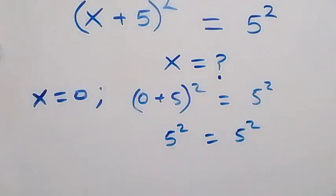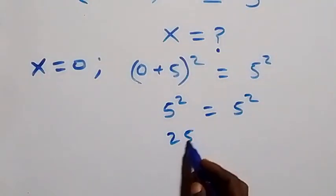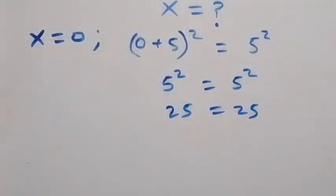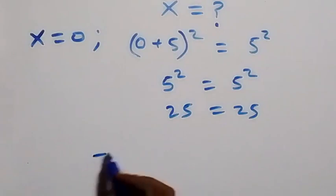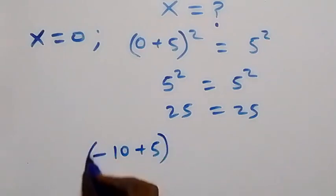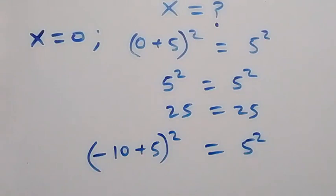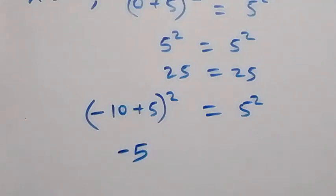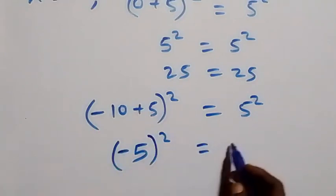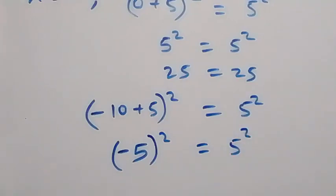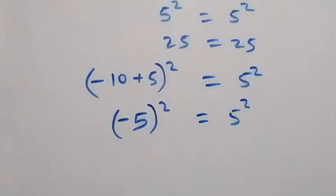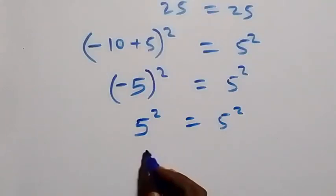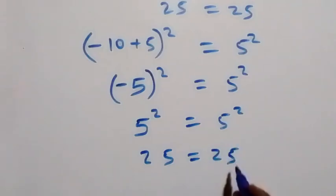That is 25 equals 25, which is true. For x equals minus 10, the equation becomes (−10 + 5)² equals 5², so (−5)² equals 5². Squaring a negative gives a positive, so 5² equals 5², which is 25 equals 25. So x equals minus 10 also satisfies the problem.